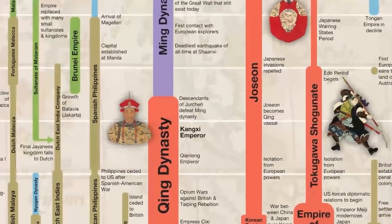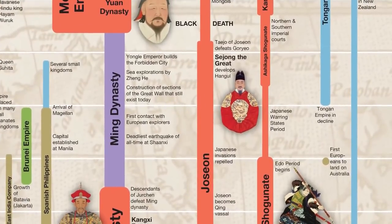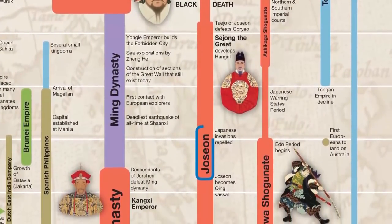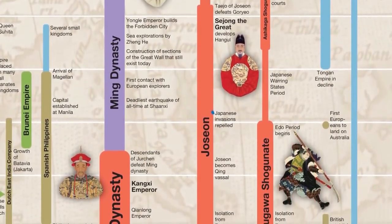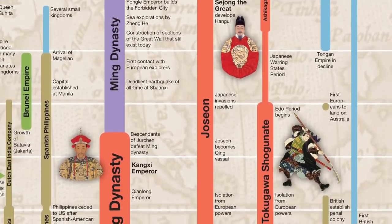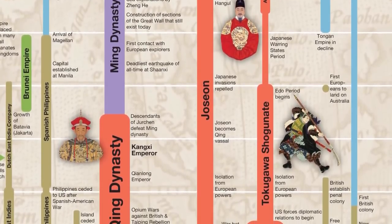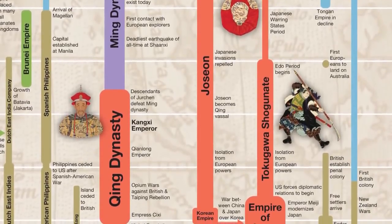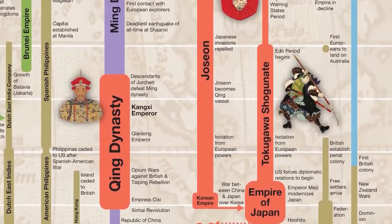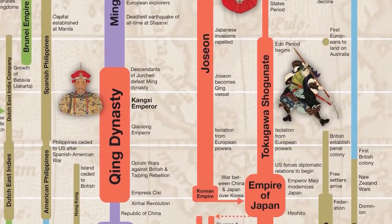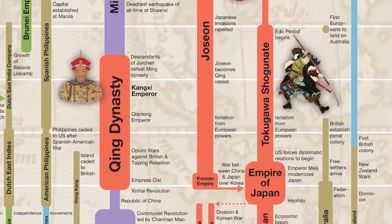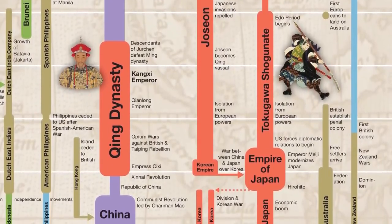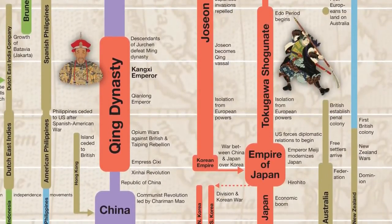In Korea, the kingdom of Goryeo was followed by the kingdom of Joseon, whose most famous ruler was Sejong the Great, creator of the Korean writing system that is still used today. In the 1800s, China and Japan ended up fighting over Korea, with Korea eventually becoming part of the Empire of Japan until after World War II, when it split into the North Korea and South Korea that we are familiar with today.